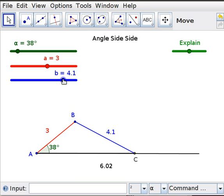So again, it doesn't have to be 4.1, it could be longer or a bit shorter. Once you've settled on angle 38, side length 3, next side length 4.3,